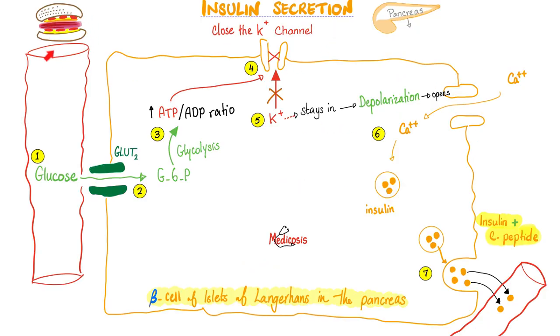In the feeding state, glucose is high in the bloodstream. The beta cell of the pancreas will listen and release insulin. This process — as they say in New York — is complicated. Let's go.